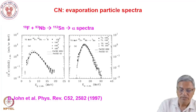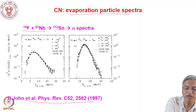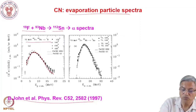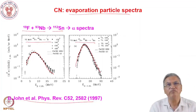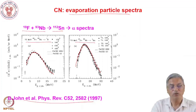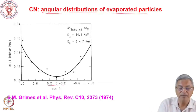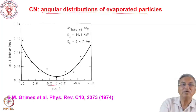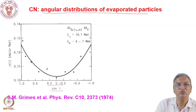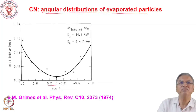As an experimental example, from our 1997 paper: fluorine plus niobium forming compound nucleus A=112. The alpha particle spectra and proton spectra both show a clear Maxwellian nature — a clear-cut signature of compound nucleus decay. Similarly, the angular distribution of evaporation particles shows forward-backward symmetry as a function of theta or cos theta, symmetric in both hemispheres. These Maxwellian particle spectra and forward-backward symmetric angular distributions are the two signatures of compound nucleus formation.